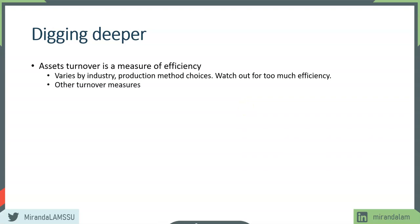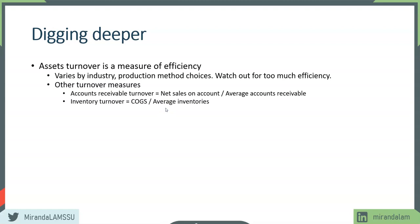Here are some common turnover measures. Accounts receivable turnover measures how fast a company can collect from its customers. Inventory turnover is one that management looks at a lot. Both are very important for managing a company's current assets. Fixed asset turnover is particularly important when discussing too much efficiency — if it's much higher than competitors, there's a good chance the company may be operating close to capacity.